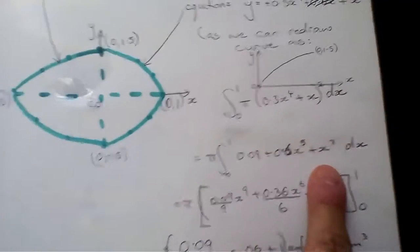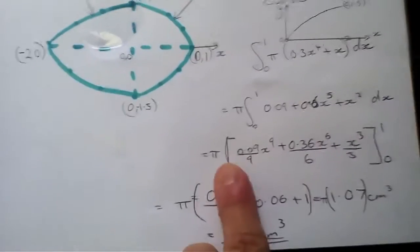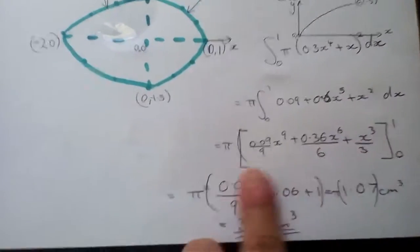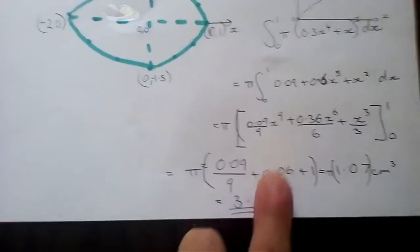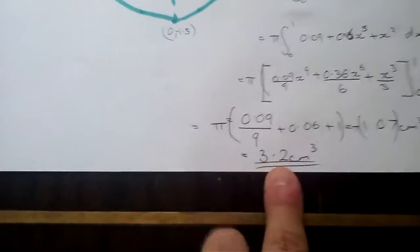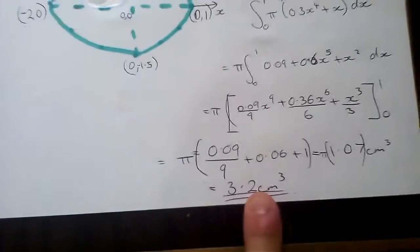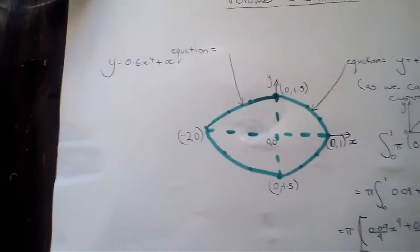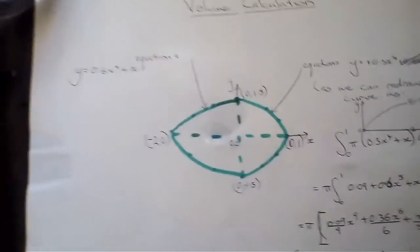And we get down to this term here when we've expanded it out. Then we'll take the integral, increase the powers and put the power on the bottom, and then we work it out and it gives you roughly the right answer. And then you do the same for the other side and add those two together, and that's basically it.